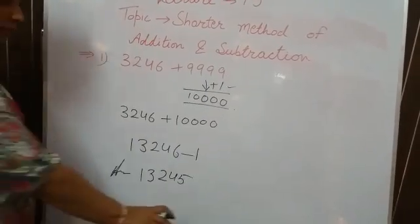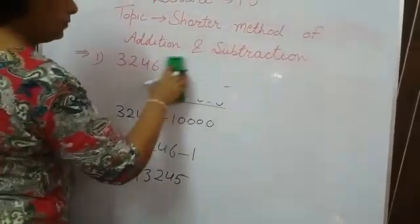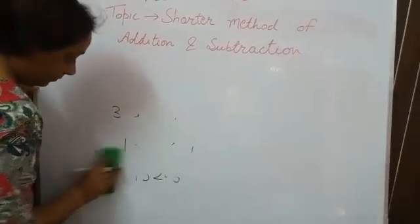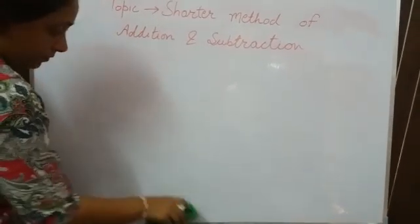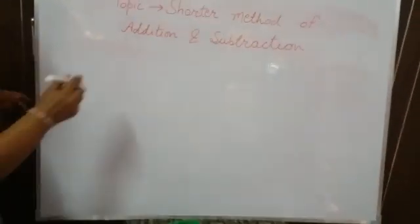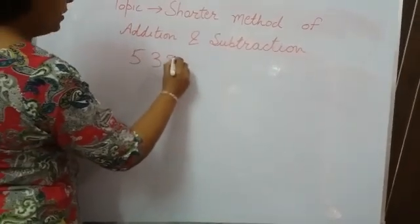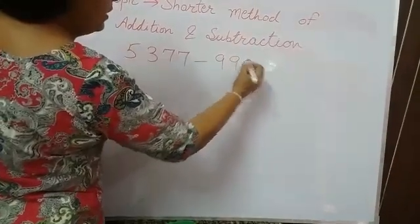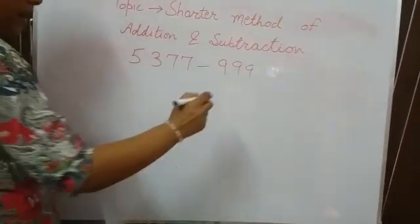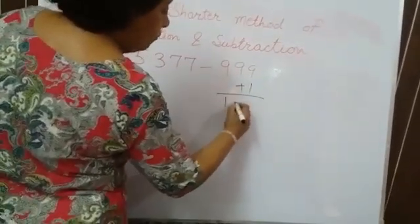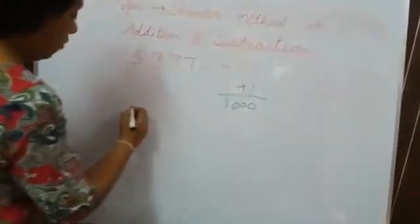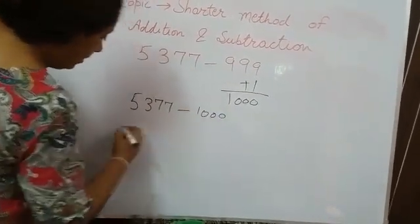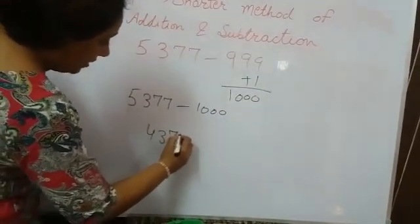Next method is subtraction. Now your statement is 5,377 minus 9,099. First add plus 1, you got 1000. Now 5,377 minus 1000, then you got 4,377.